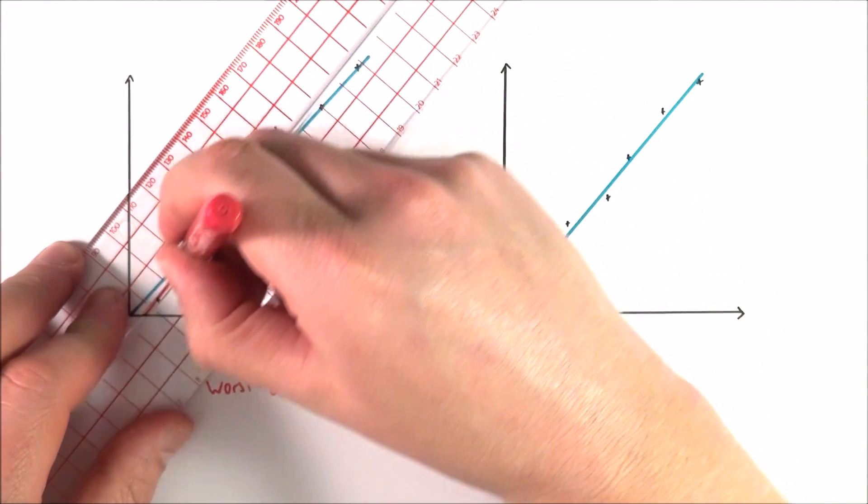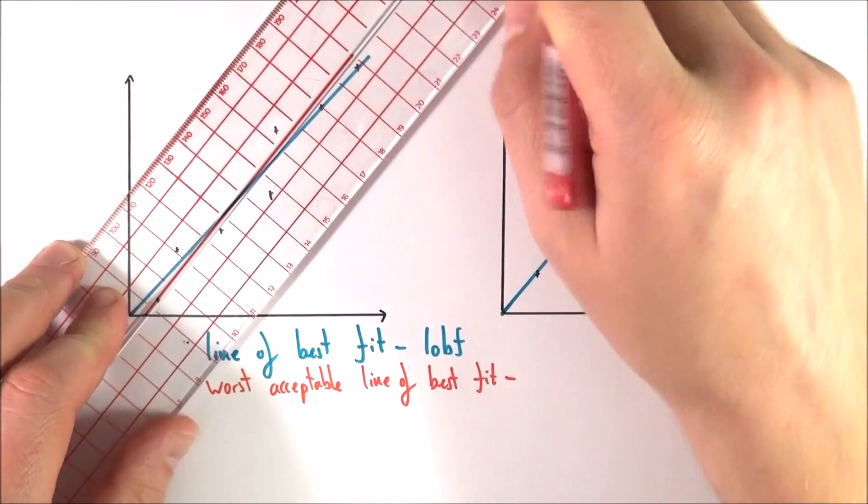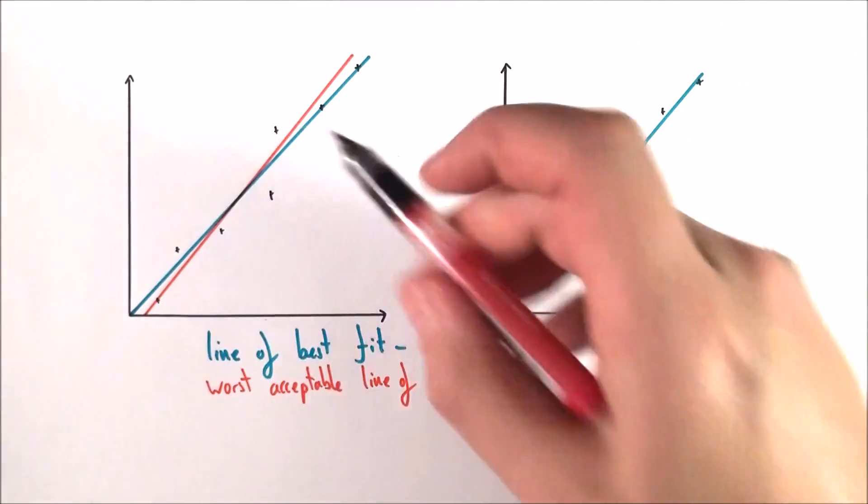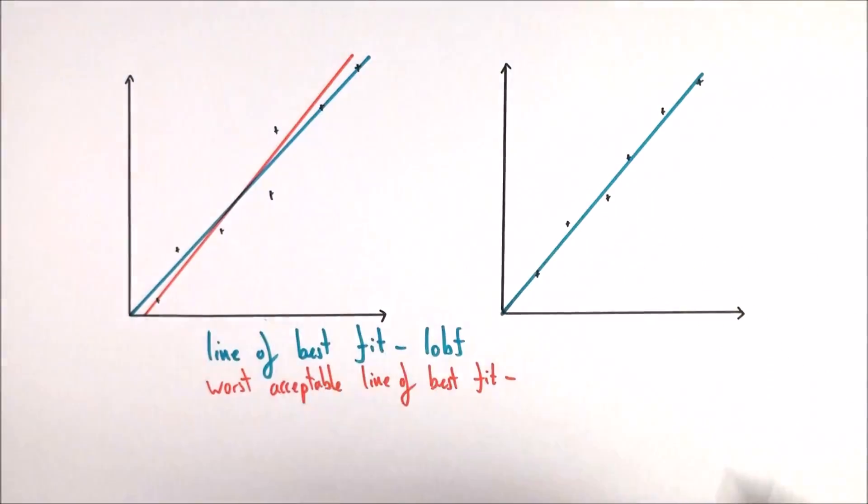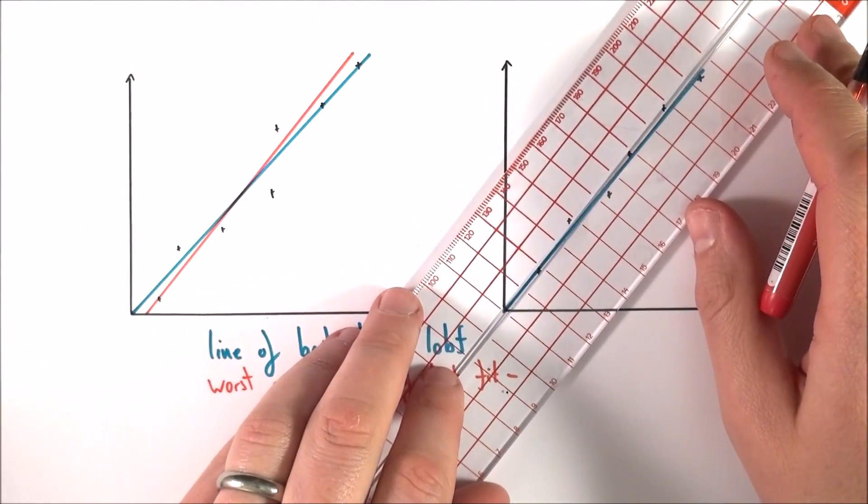And perhaps maybe, I don't know, it looks something a bit like that. Okay, there's no definite sort of maximum. So maybe this one here still got points above and below the line.